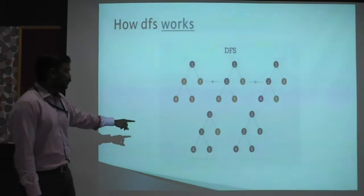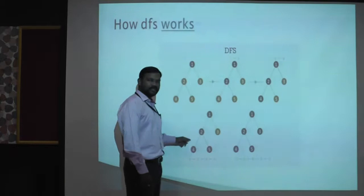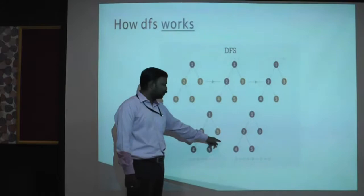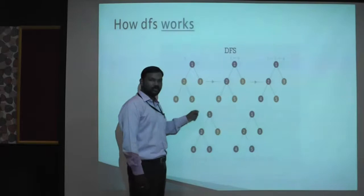After it reaches five, again it is a dead end, so it cannot proceed further. So it goes back to two. After going back to two, all the nodes are already visited. So again it goes to its previous parent node, one. At node one, there is an unvisited node called three, so it goes to three. From three, it searches for other alternate options. If there are no options, it stops, and it pops off from the stack.